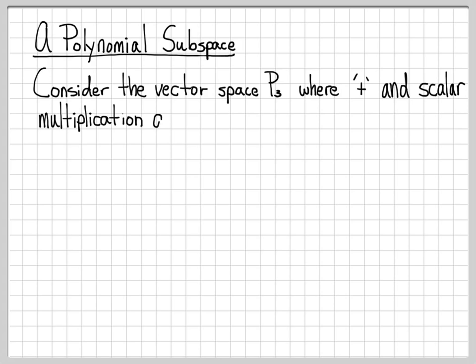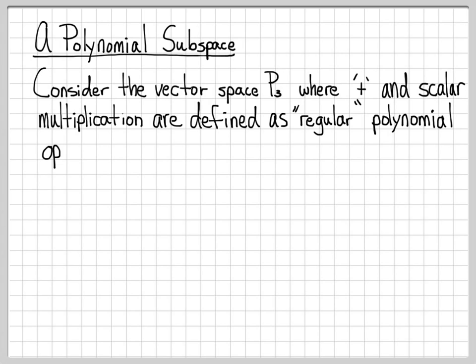We know what a vector space is — it's just a collection of objects. In this case, the collection of objects is all polynomials of order three. The operations of addition and scalar multiplication are just the typical operations we use when working with polynomials. We've talked about polynomial vector spaces before, so we know that P3 is indeed a vector space.